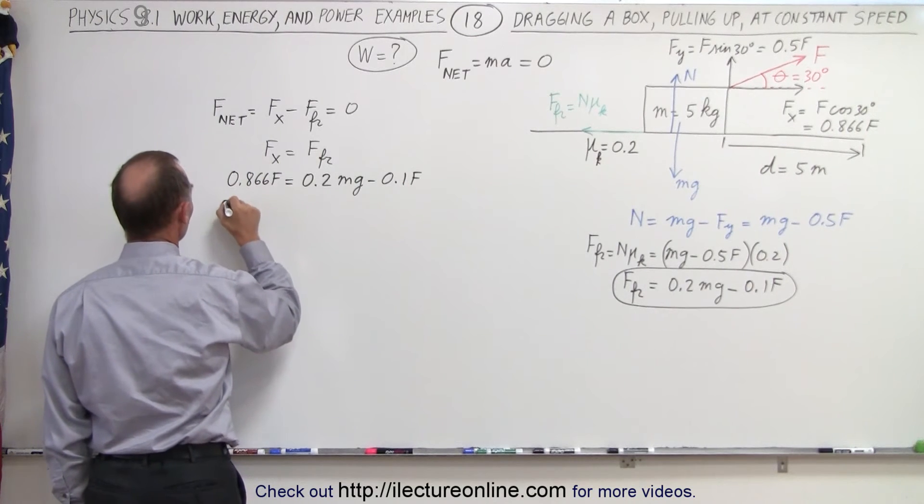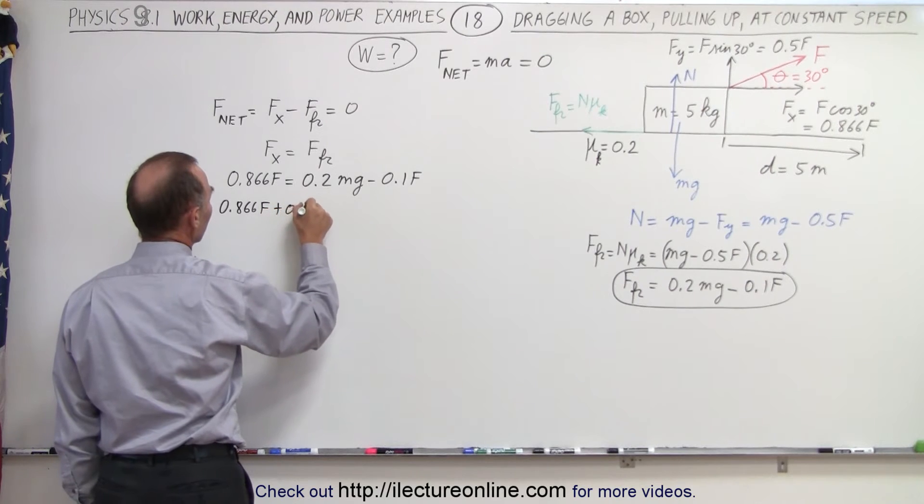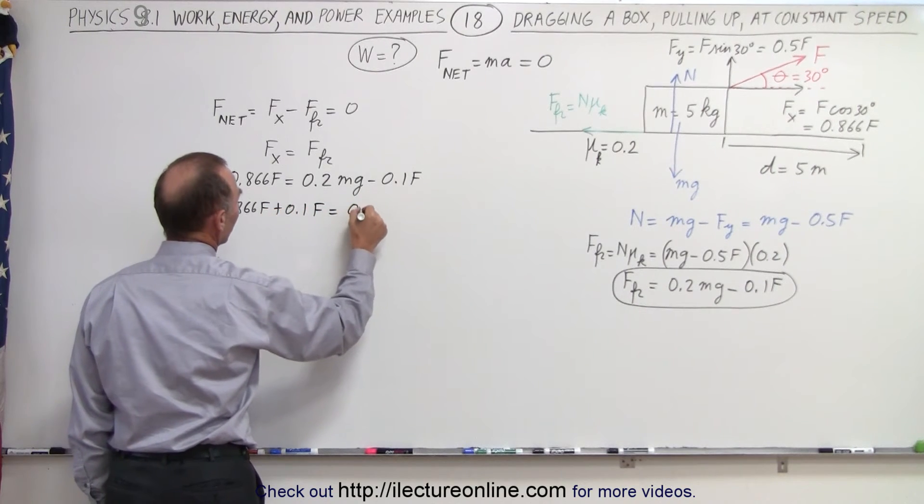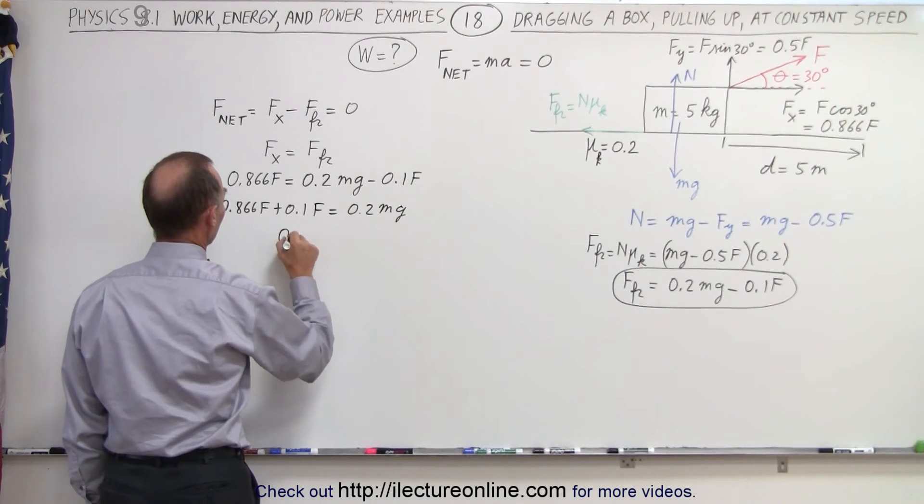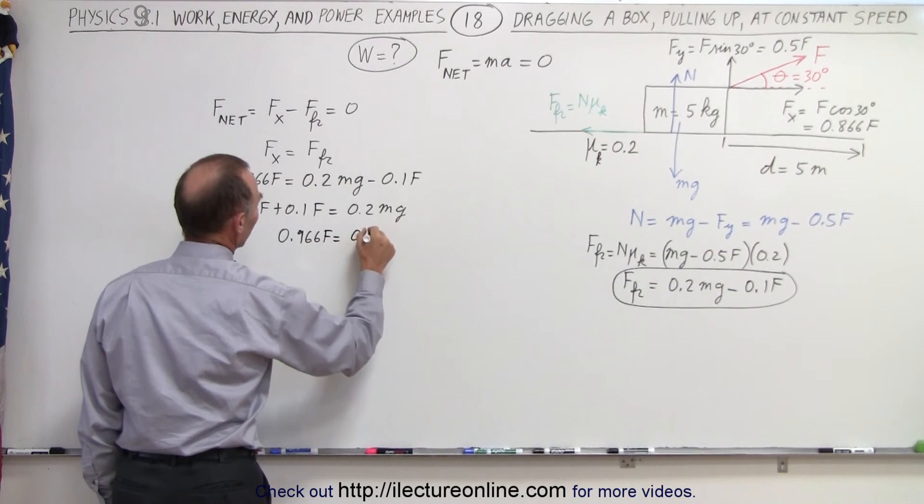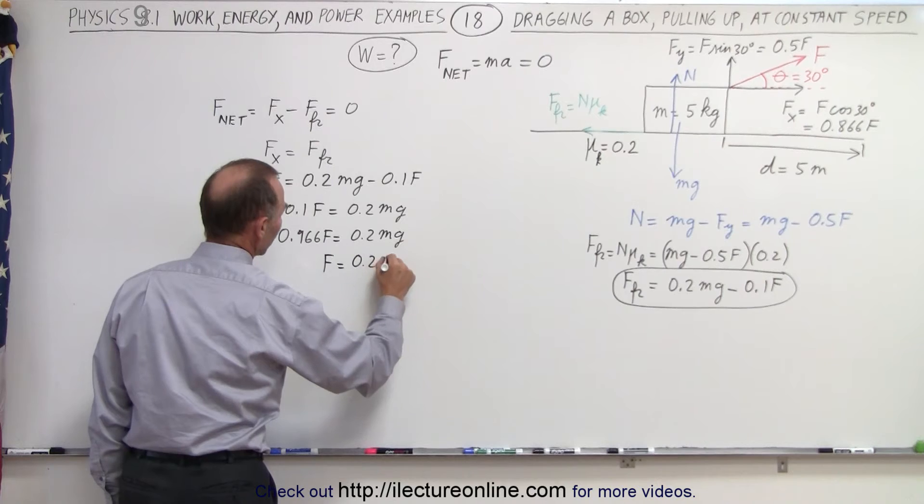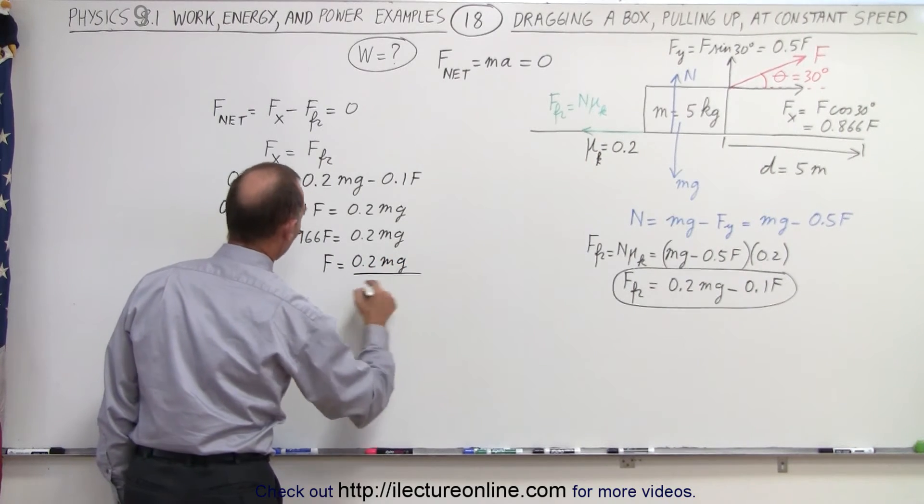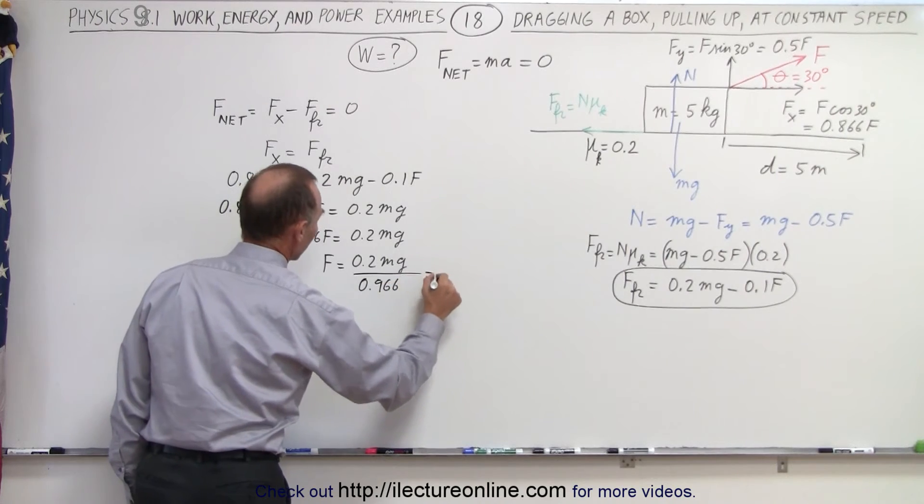Since we're trying to find the magnitude of the force, we're going to move all the terms with f to the left side. So we have 0.866f plus 0.1f is equal to 0.2mg, so we have 0.966f is equal to 0.2mg.